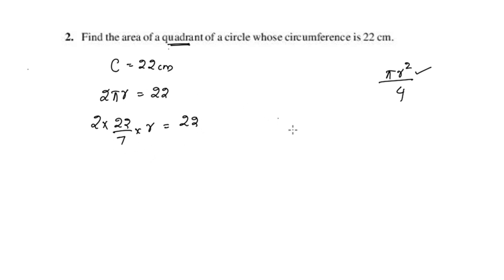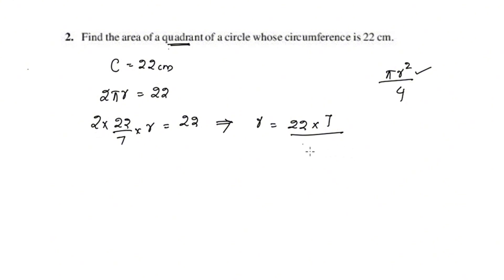Solving for r: rearranging, 7 is the denominator and 22 and 2 are in the numerator. We have 22 and 22 canceling. So r equals 7 by 2.